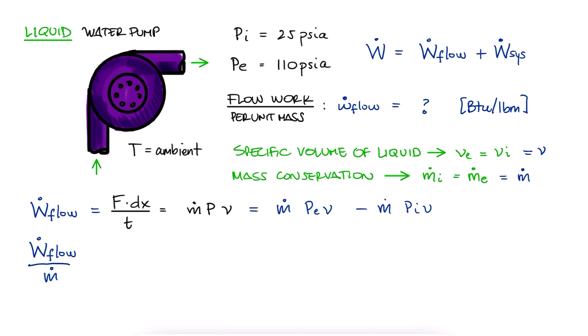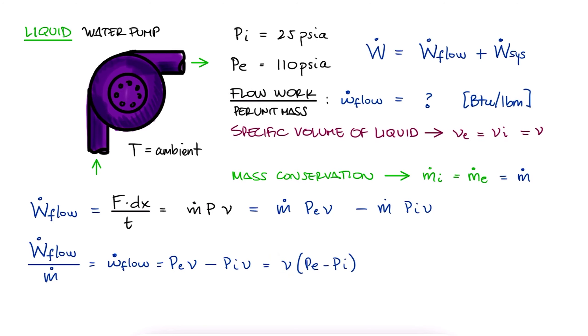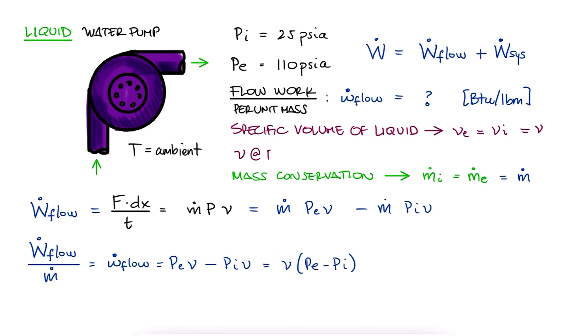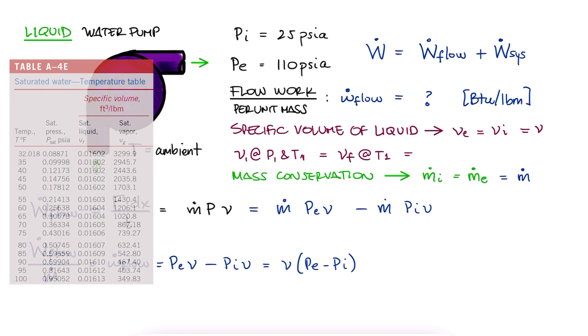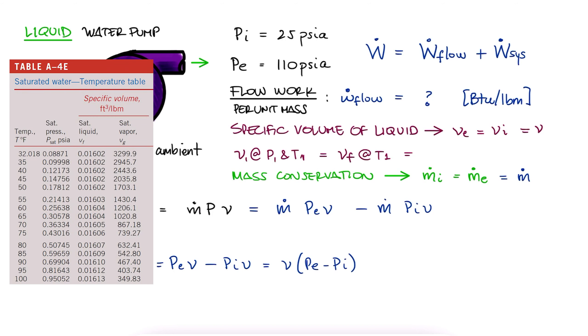And since what we want is the flow work per unit mass, all we need is the specific volume. In the compressed liquid properties 6 minute lecture, we learned that the specific volume of a compressed liquid can be assumed to be the saturated liquid specific volume at that temperature. We look up VF for whatever we want to call ambient temperature, let's say 70 degrees Fahrenheit, and use that to calculate the work.